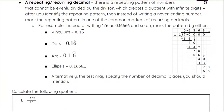Our third possible situation is what we call a repeating or recurring decimal. If there is a repeating pattern of numbers that cannot be evenly divided by the divisor, it creates a quotient with infinite digits — it goes on and on and never stops. For example, 0.63636363, or 0.1111111, or maybe three digits repeating. If we see that repeating pattern, instead of writing a never-ending number, we mark the repeating pattern using one of the common markers.